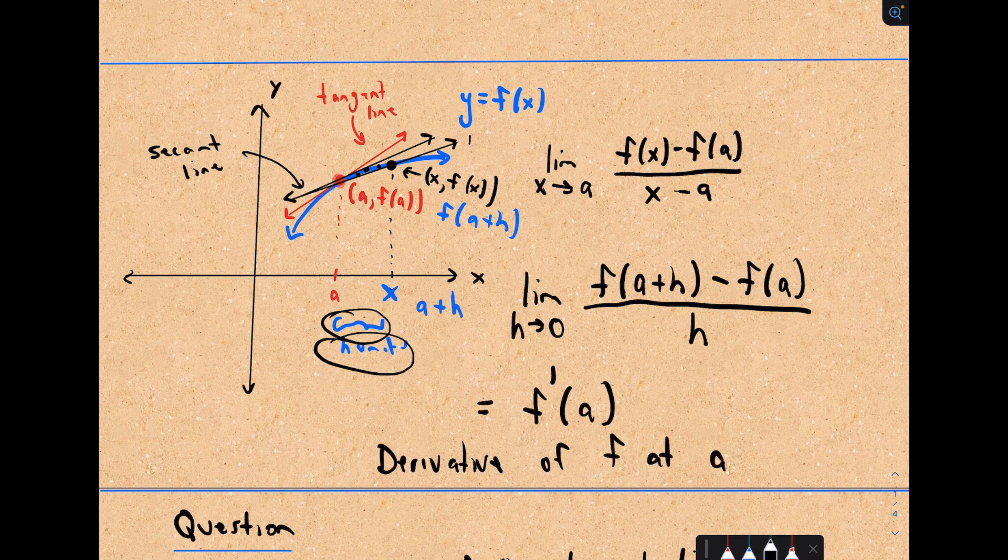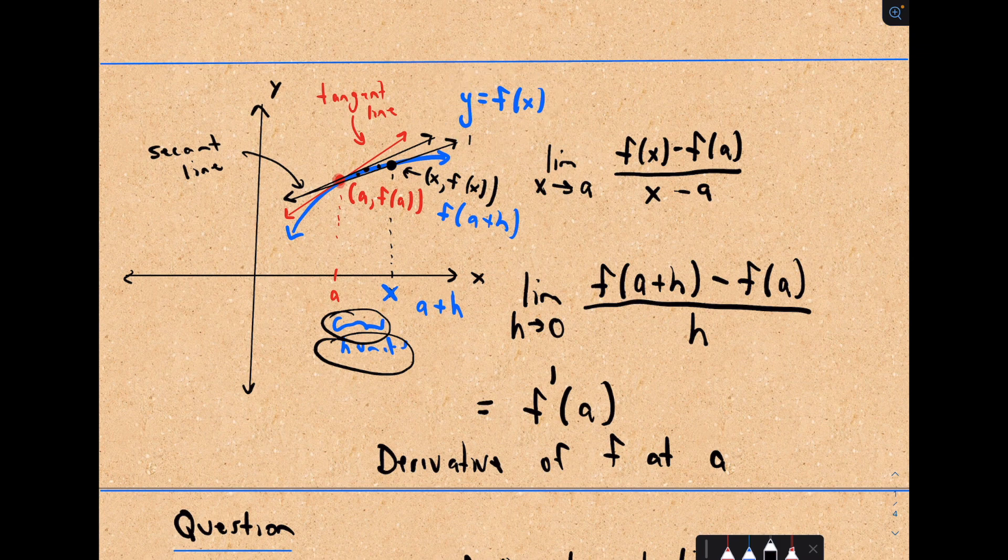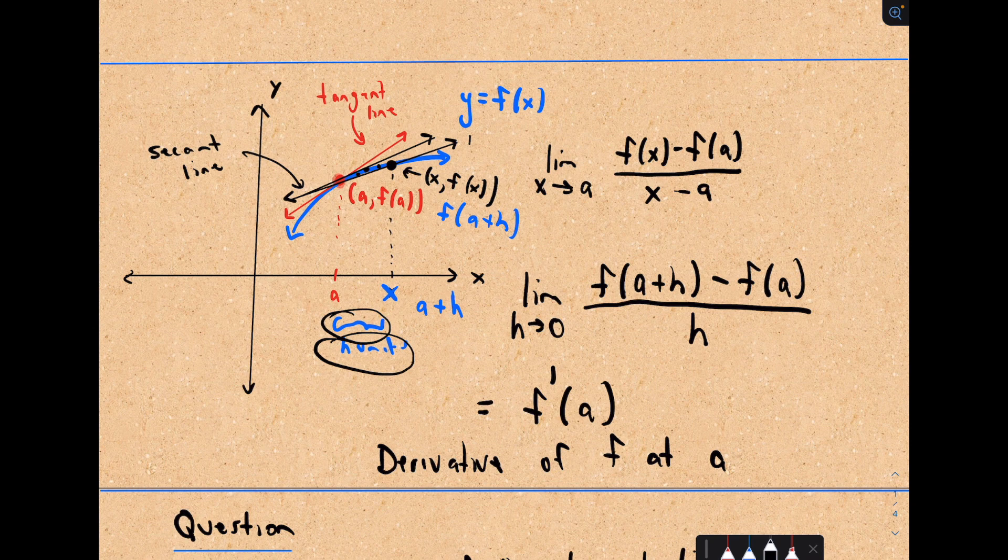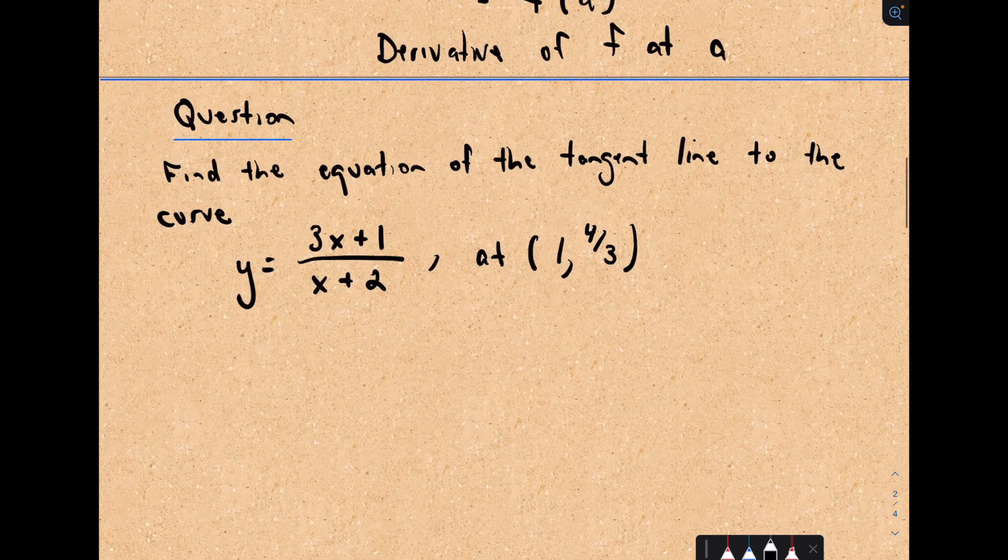You may recall that if this function told you velocity, instead of computing the slope of a tangent line, you're computing instantaneous velocity. So slopes of tangent lines, finding instantaneous velocity, if you hear the word instantaneous in calculus, you're doing something with derivatives, you're computing a derivative.